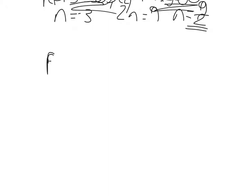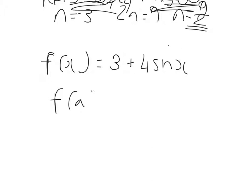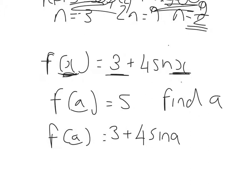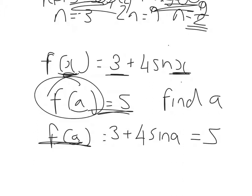Next one: f of x equals 3 plus 4 sine of x. The question then says that f of a equals 5, find a. So again, it's this substitution. Whatever's in the bracket, it's 4 sine of whatever's in the bracket, with a 3 plus at the start. So a is in the bracket, so it's 3 plus 4 sine a, and that then holds a value of 5. That is now a trig equation, so I'll go ahead and solve it and introduce the CAST diagram.